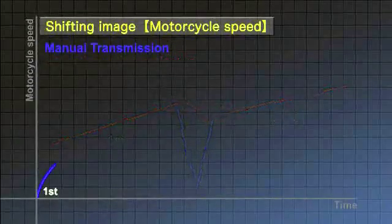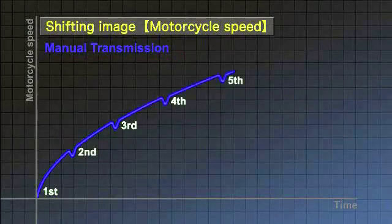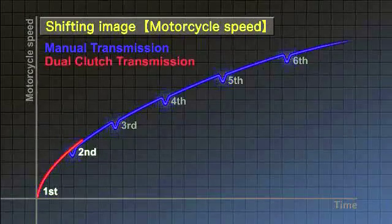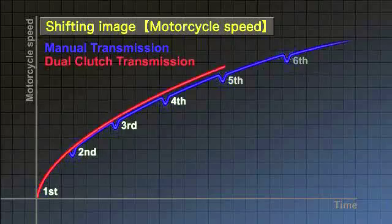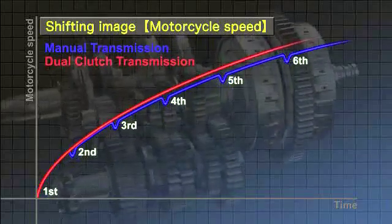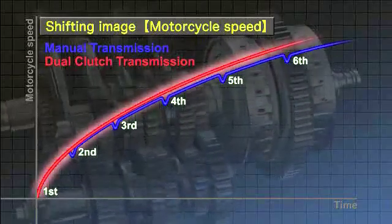A manual transmission interrupts traction which results in an awkward feel and sluggish acceleration. In contrast, the dual clutch transmission allows drivers to accelerate directly and smoothly.